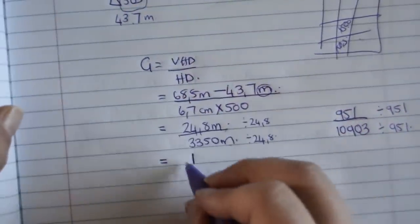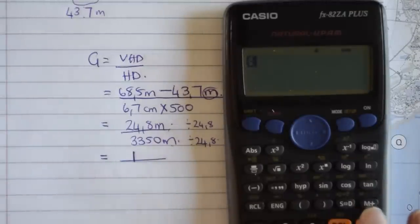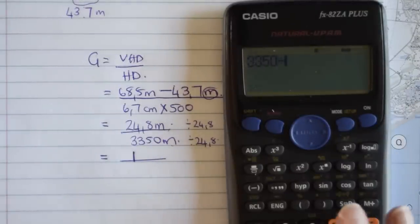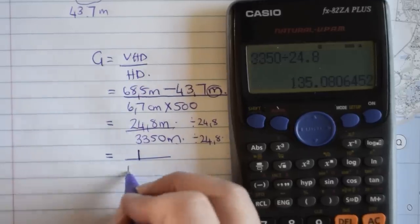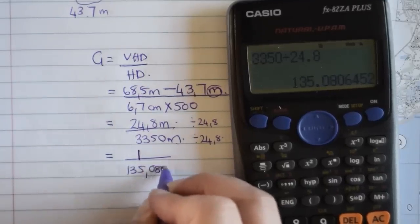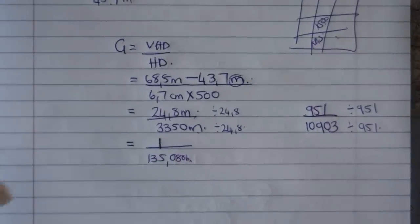So, make sure. If you do this, you will get the answer. You take 3350. You divide it by 24.8. And you will get the answer of 135.0806. Just look at what they say, how you have to do the rounding. If it's to two decimals, three decimals, or four decimals, just double check.